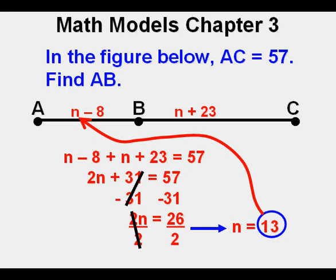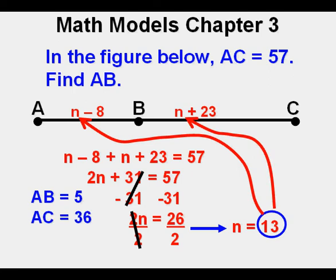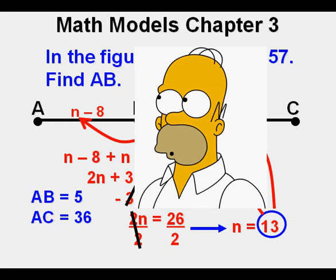Substitute 13 for n in AB. So based on n equals 13, segment AB is 13 minus 8 or 5. Then we use n equals 13 for the other segment, BC. This would make the segment BC equal 13 plus 23 or 36. With AB at 5 and BC at 36, then AC would be 41. But is AC 41? No, it's 57. This check would have told the students they were wrong, if they had gone far enough. Always check. So this was their worst mistake. Not checking. Don't be like Homer. And be sure to check your answers.